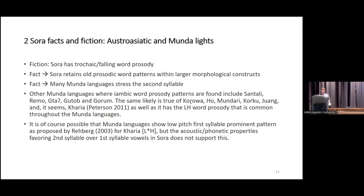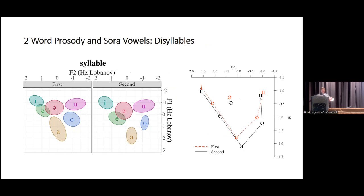This is probably true of most other Munda languages. In the case of Karia, it has been proposed that the language instantiates an L-star-H prosody, which is at least plausible with regards to Sora data. However, when we compare vowel qualities of first and second syllables in disyllables, first syllables are more centralized and less contrastive compared to second syllables, which show more peripheral values. So vowel contrasts are more robust in second syllables than first syllables.